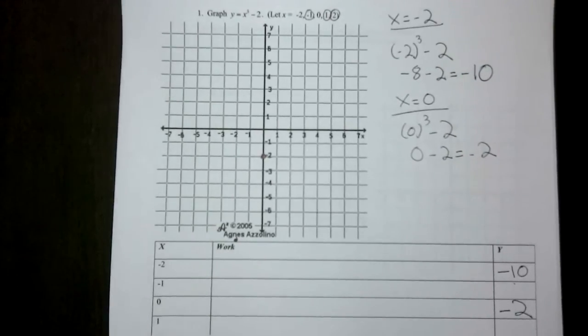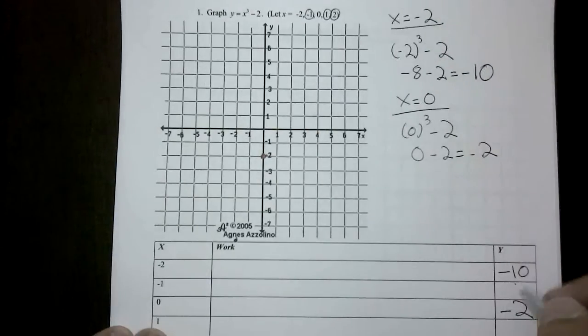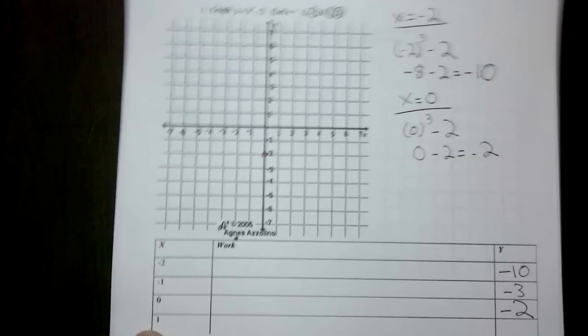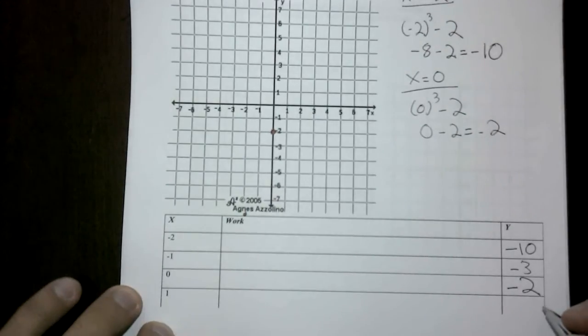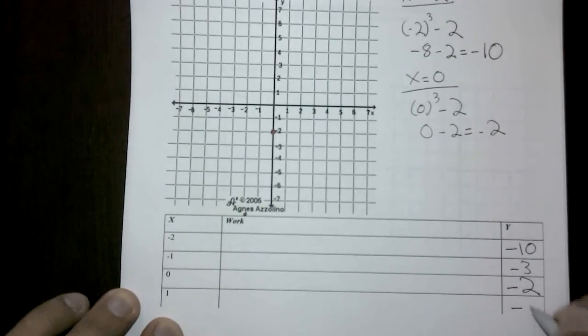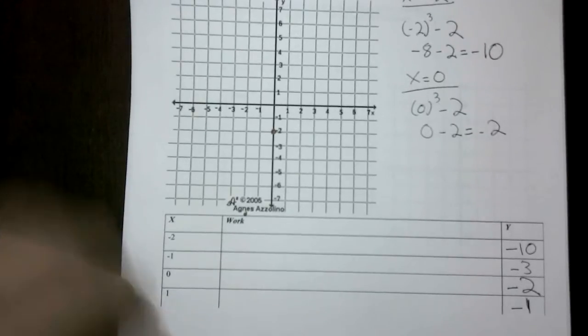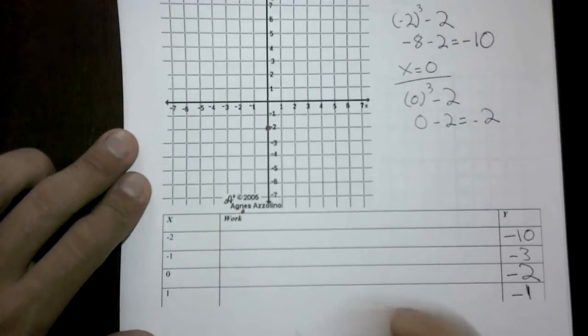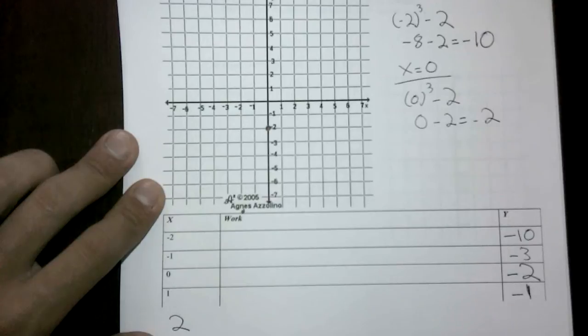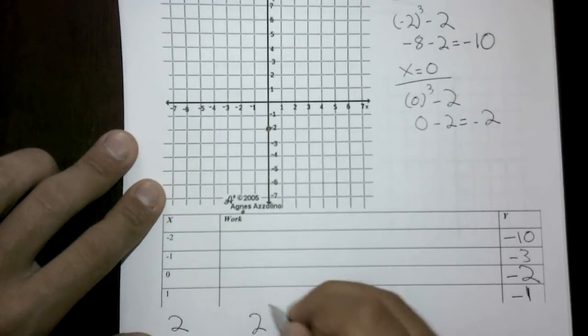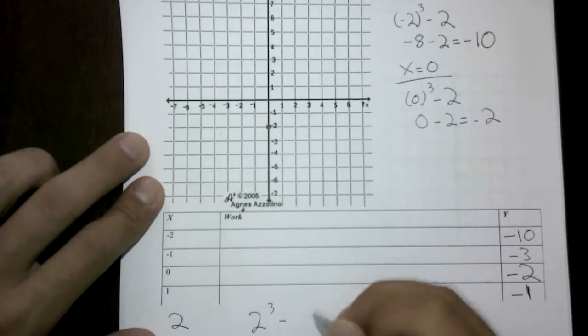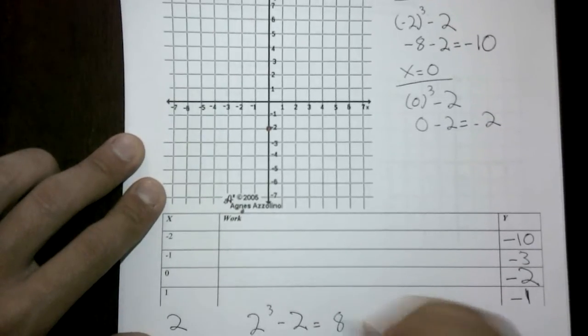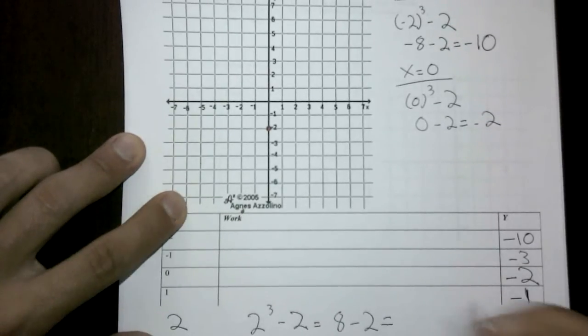You should have been able to come up with: if x is -1, the outcome is -3. If x was positive 1, the outcome there was -1. And if we were concluding with where x is 2, if we have 2 and we're cubing it, keeping in mind we're deducting 2 with this equation, we can say that this is going to be 8 minus 2, so this should be 6.